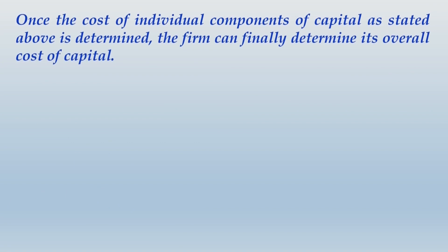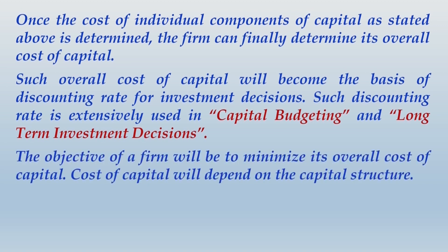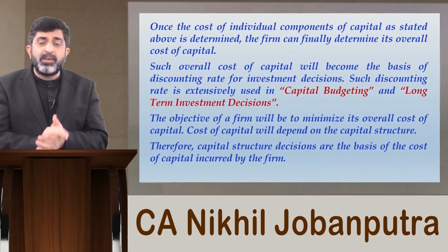Once the individual costs of all capital components are determined, the firm can finally determine its overall cost of capital. Such overall cost of capital will become the basis of the discounting rate for investment decisions. This discounting rate is extensively used in capital budgeting and long-term investment decisions. The objective of a firm will be to minimize its overall cost of capital, and the cost of capital will depend on the capital structure - therefore capital structure decisions are the basis of cost of capital incurred by the firm.